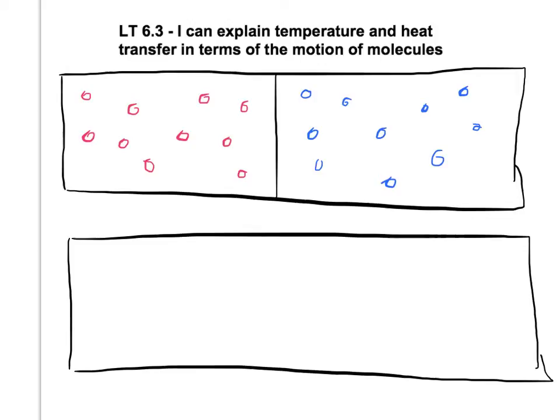So if we look up at the top rectangle, I have two rectangles that are touching with a wall or a divider right here in the middle. So there's a big divider here. The molecules cannot go in between. This side is hot, and this side is cold.